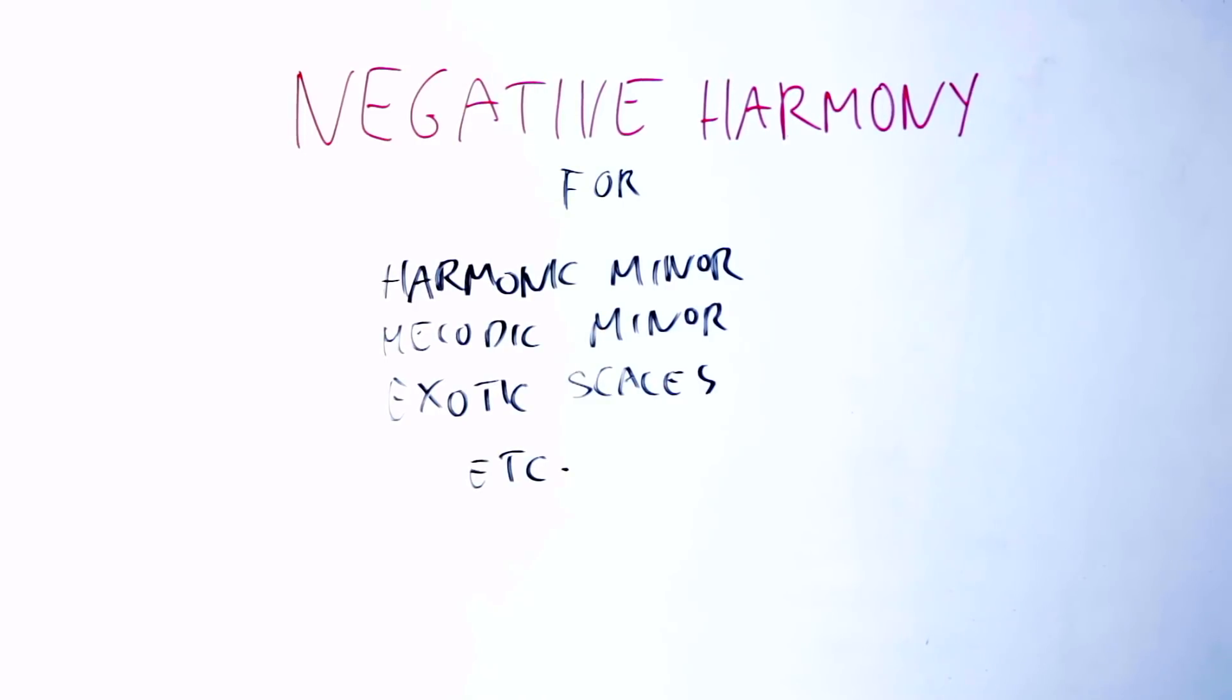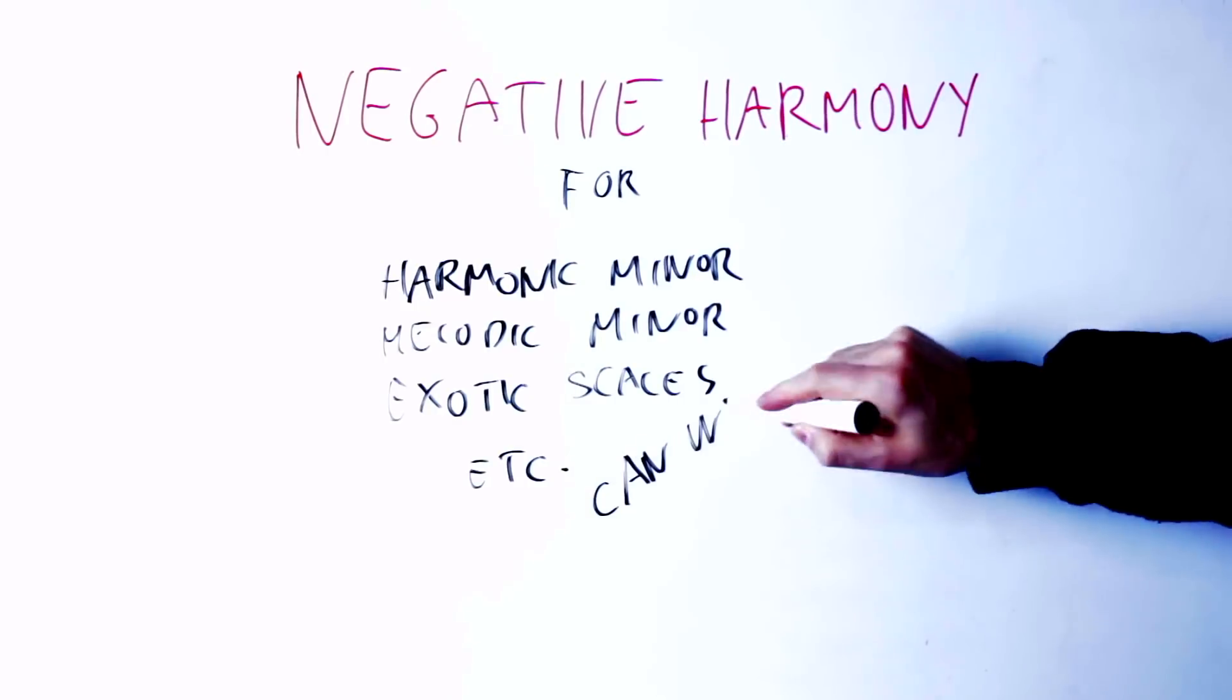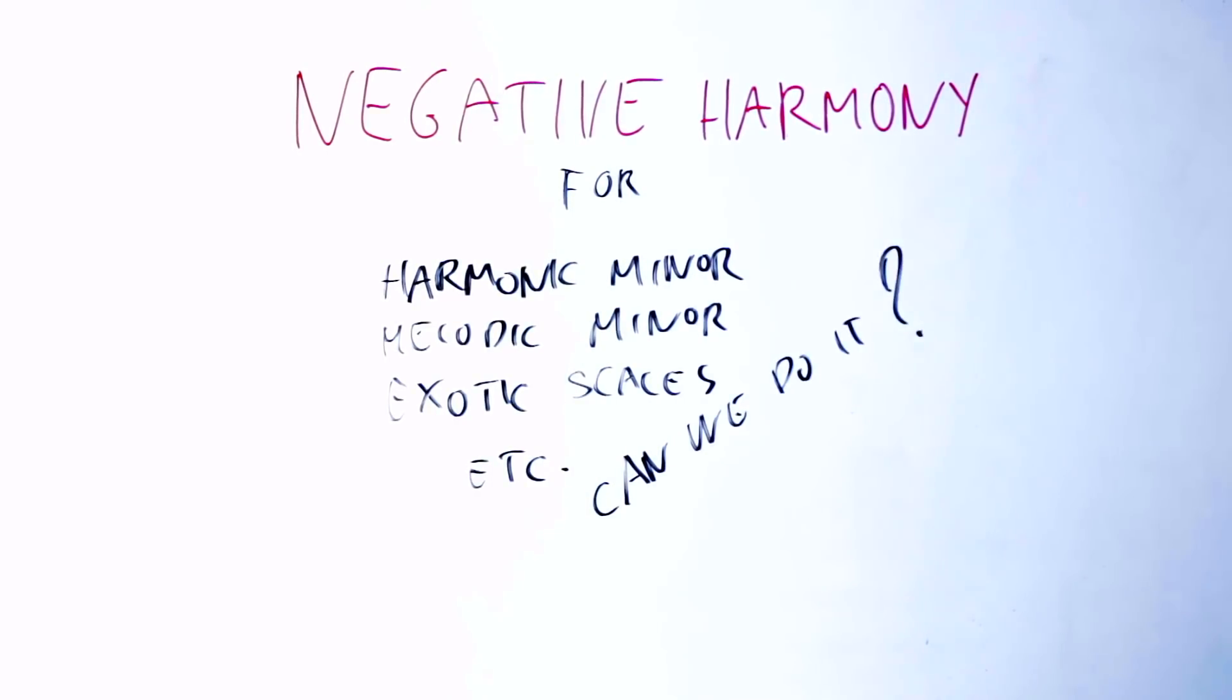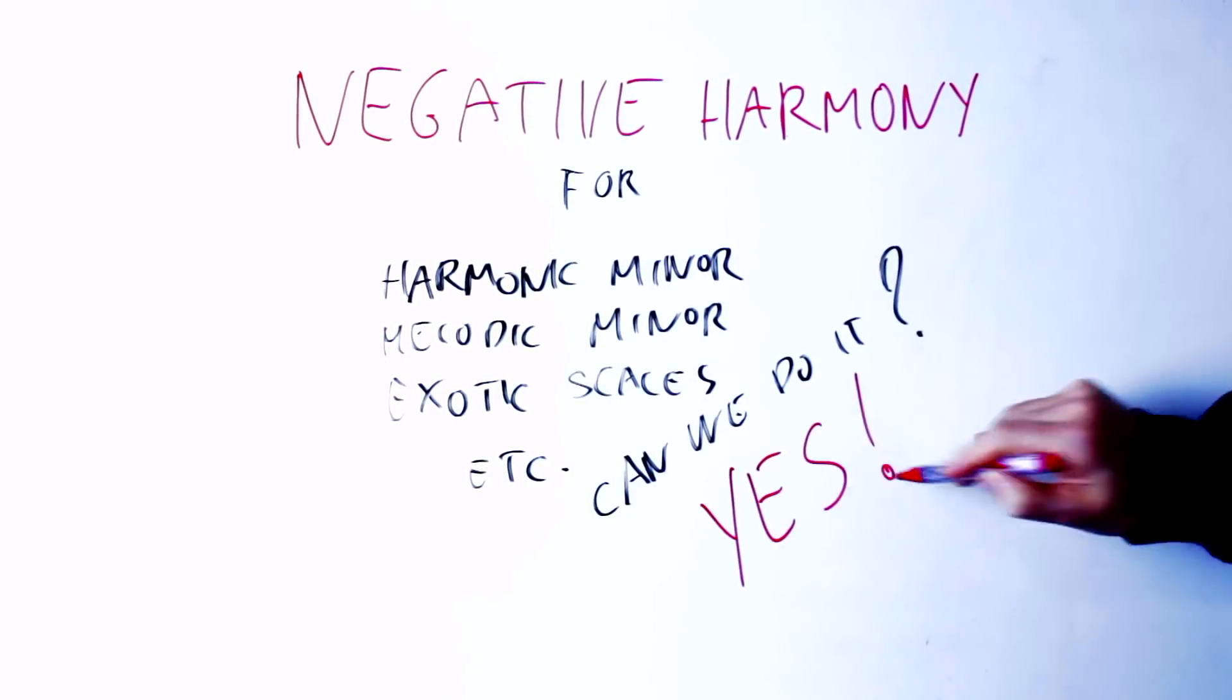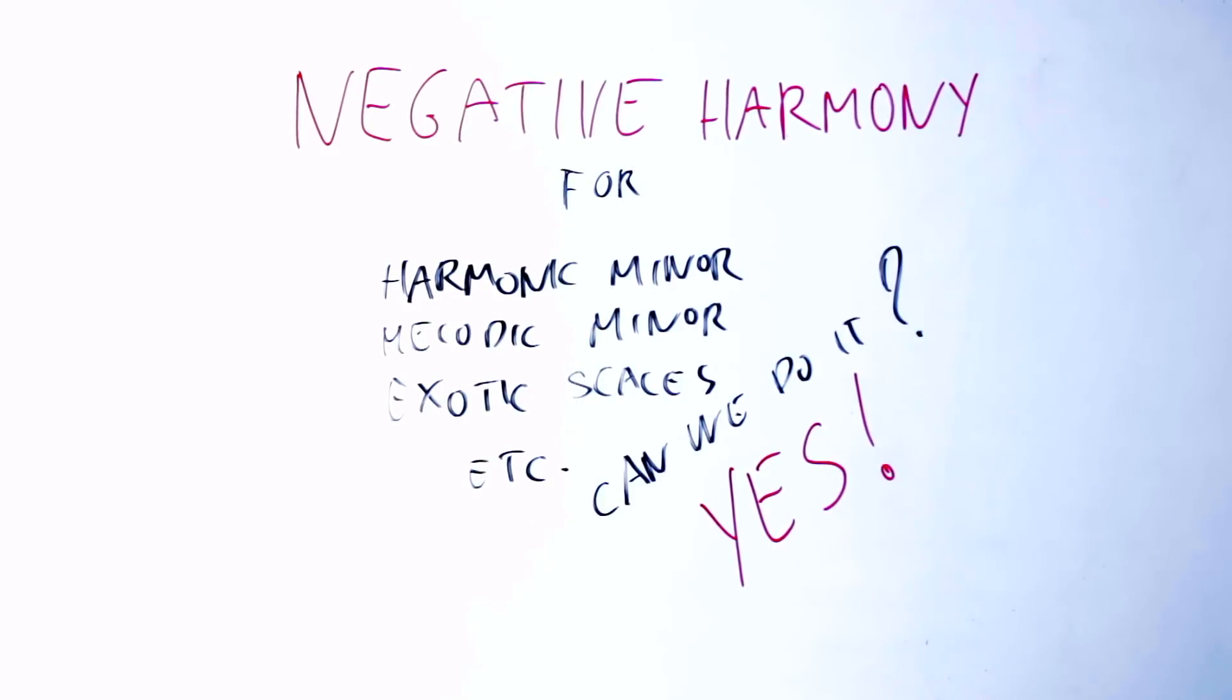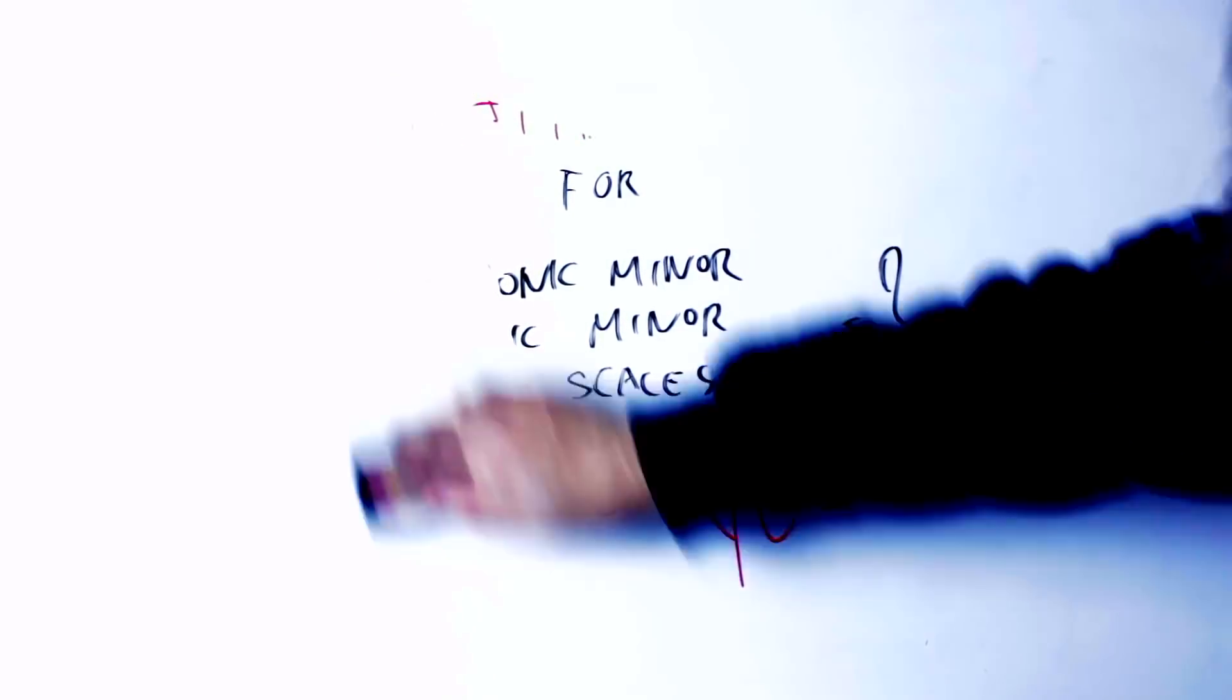Most videos on negative harmony, including mine, apply negative harmony only to the major scale and flip it around to find the minor scale. Can we apply negative harmony to scales other than major and natural minor scales? Yes, we can. What happens when we apply negative harmony to the scale? This is what we're gonna see today.